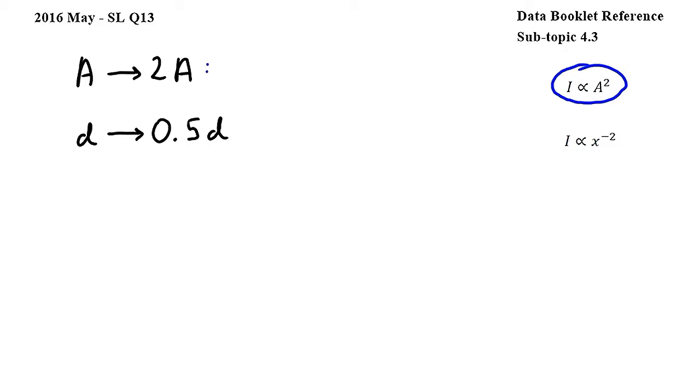Applying this concept to our question, we can conclude that as the amplitude changes from A to 2A, the intensity will change to be 2 squared of the original intensity, in other words, 4I.